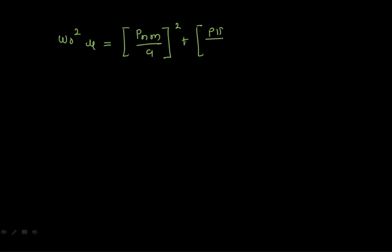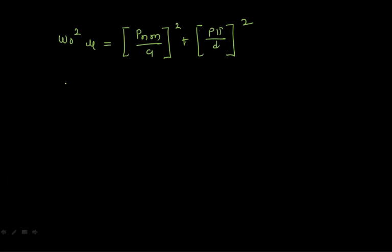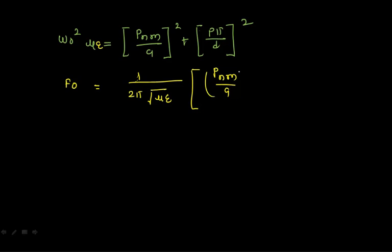At f = f₀, β = pπ/d. Substituting all values: ω₀²με = (X_nm/a)² + (pπ/d)². Solving for f₀: f₀ = (1/2π)·√(1/με)·√[(X_nm/a)² + (pπ/d)²], which gives f₀ = (c/2π)·√[(X_nm/a)² + (pπ/d)²] for the TM mode of the circular cavity resonator.